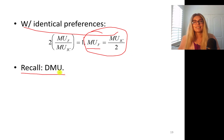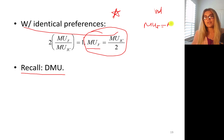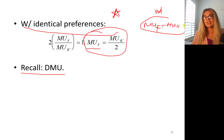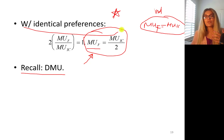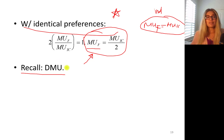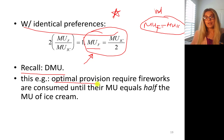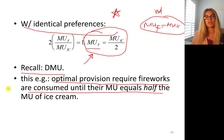Recall diminishing marginal utility. This is the optimal level — the best level. Individual maximization sets MU of fireworks equal to MU of ice cream, which is not the optimal level. This individual condition gives you fewer fireworks, whereas the optimal level gives you more fireworks. The optimal provision of fireworks requires consuming fireworks until the marginal utility of fireworks equals half of the marginal utility of ice cream.